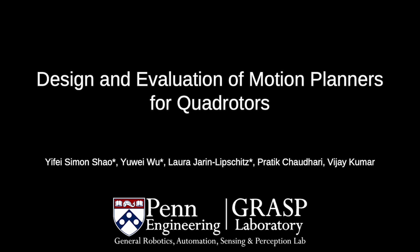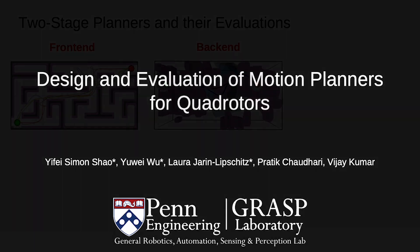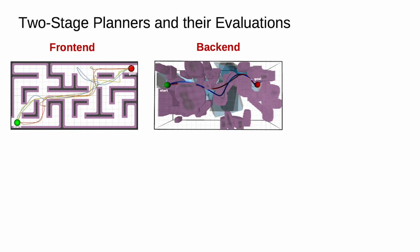In this work, we answer the question: which two-stage planner should you choose for your environment? Two-stage planners, where the front end chooses a homotopic class and the back end further optimizes the trajectory, have gained popularity due to their robustness and efficiency.